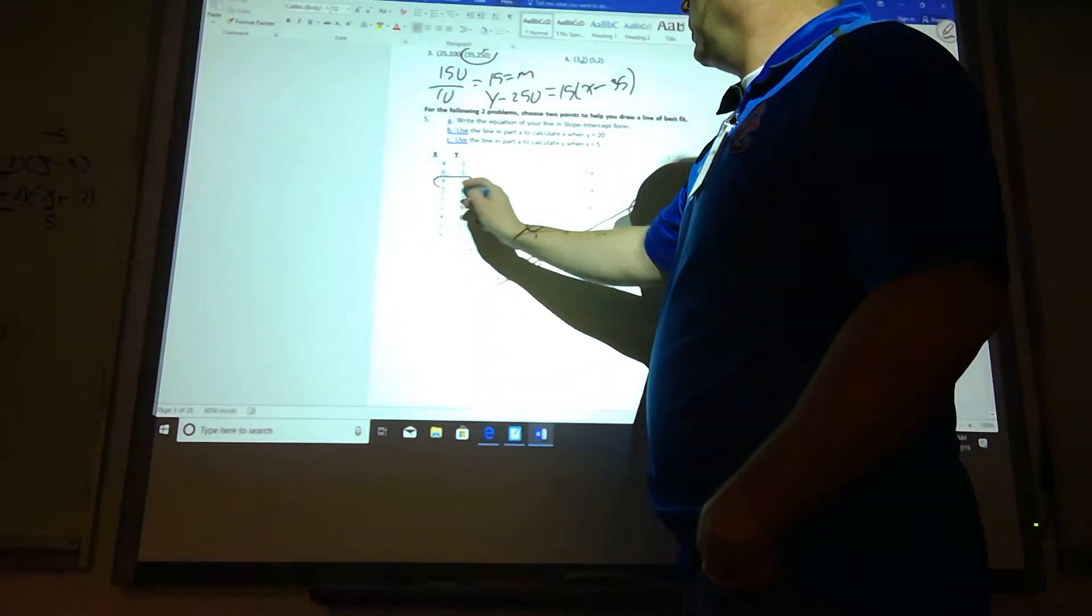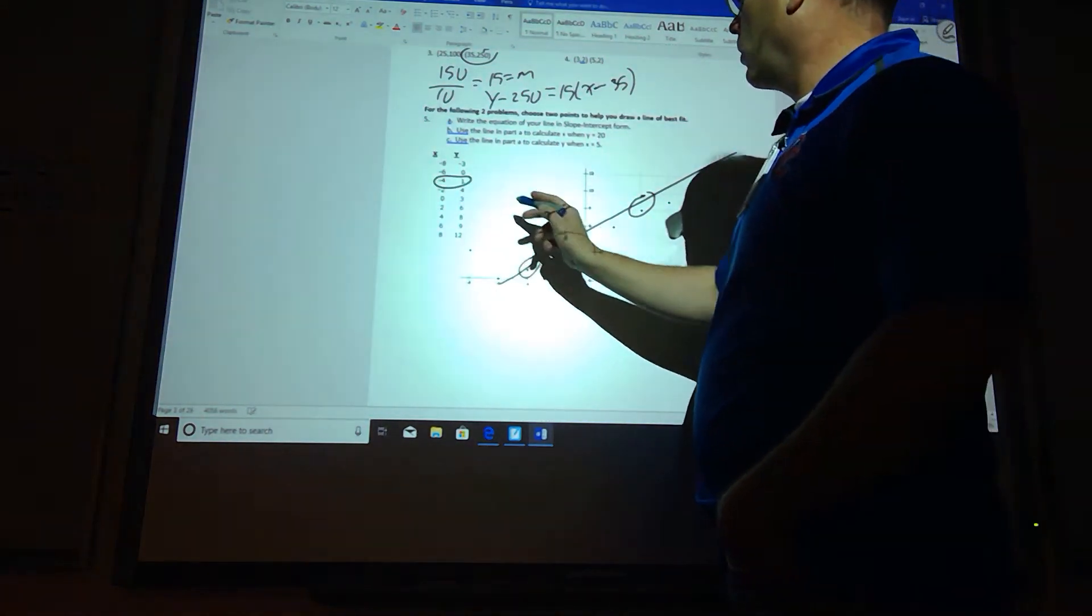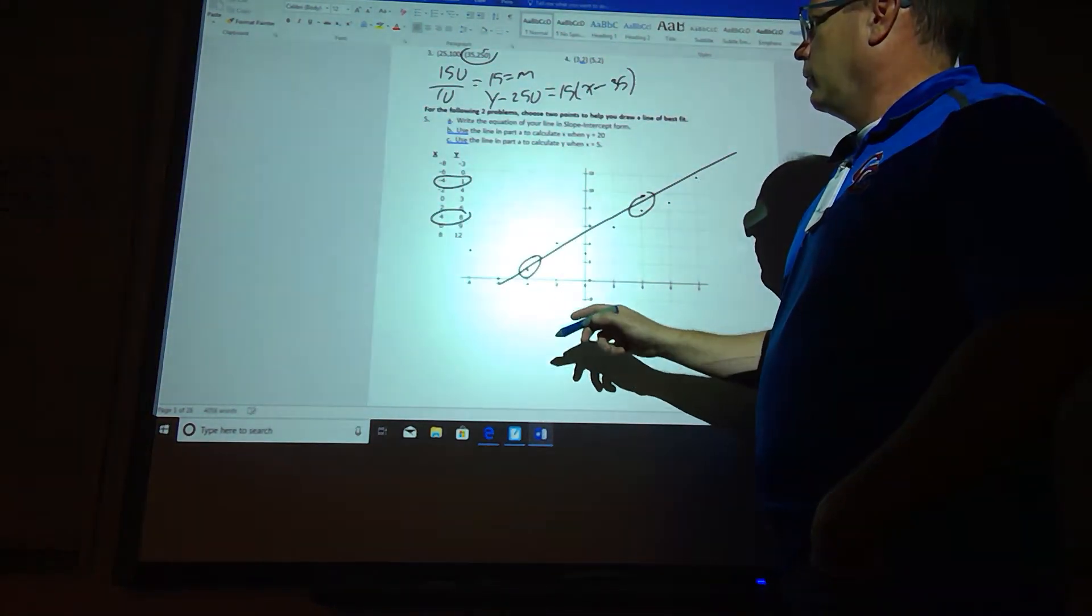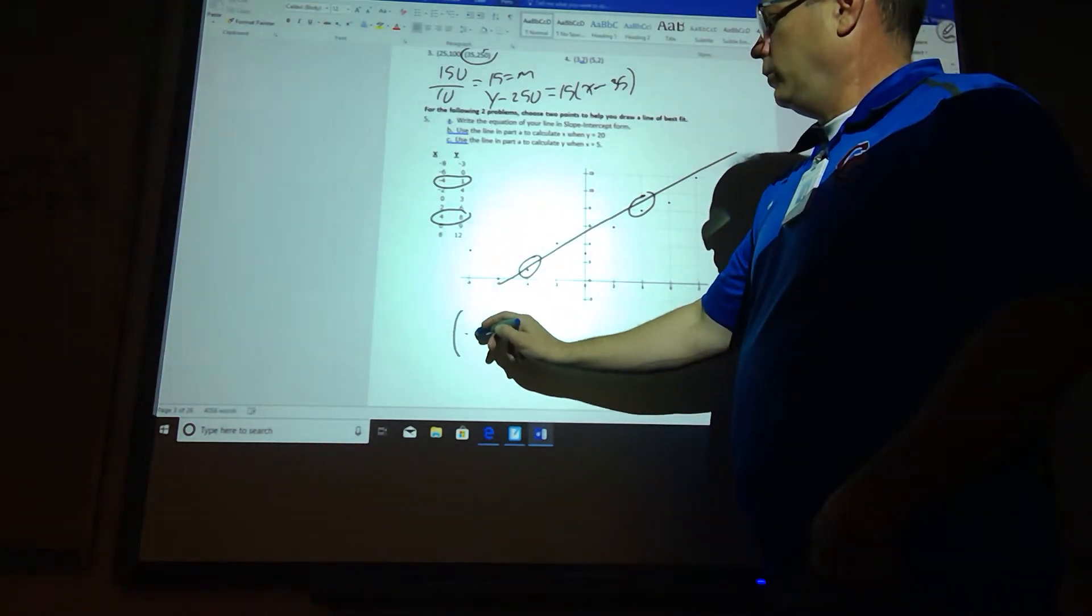So, negative 4 comma 1 would be a good point, and 4 comma 8 would be a good point. So, go through and find the equation. You're using these points.